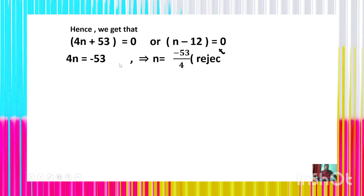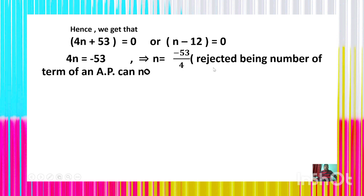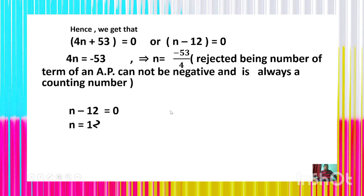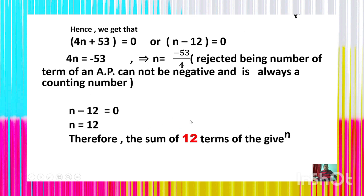From 4n + 53 = 0, we get n = −53/4, which is rejected because the number of terms of an AP cannot be negative — it must always be a natural number. From n − 12 = 0, we get n = 12, which is a natural number. Therefore, the sum of 12 terms of the given AP is 636.